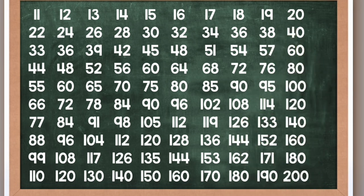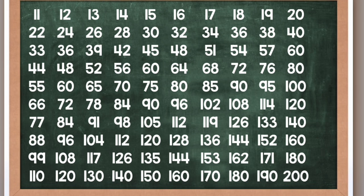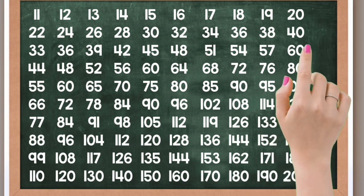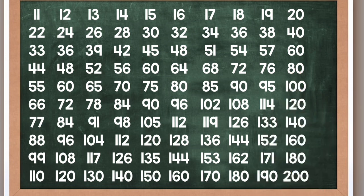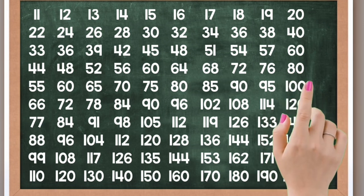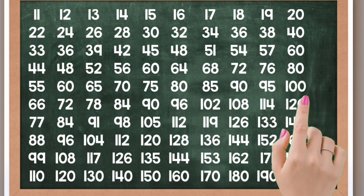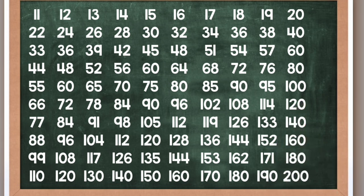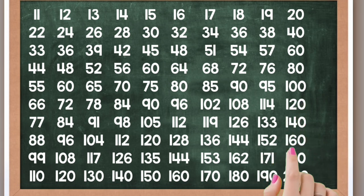20 times 1 is 20, 20 times 2 is 40, 20 times 3 is 60, 20 times 4 is 80, 20 times 5 is 100, 20 times 6 is 120, 20 times 7 is 140, 20 times 8 is 160, 20 times 9 is 180.